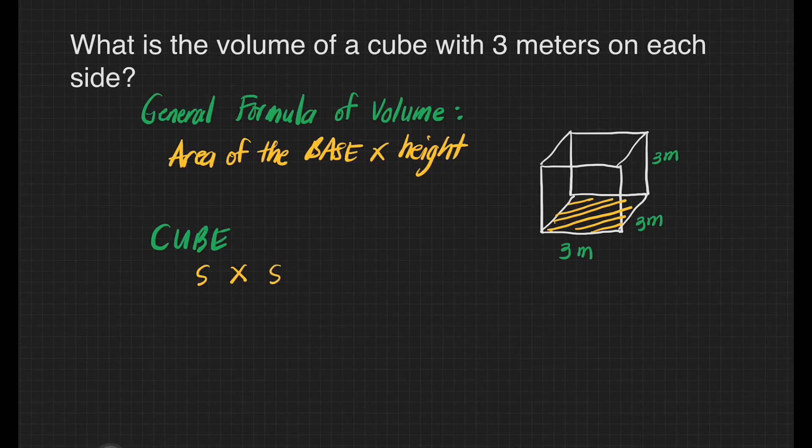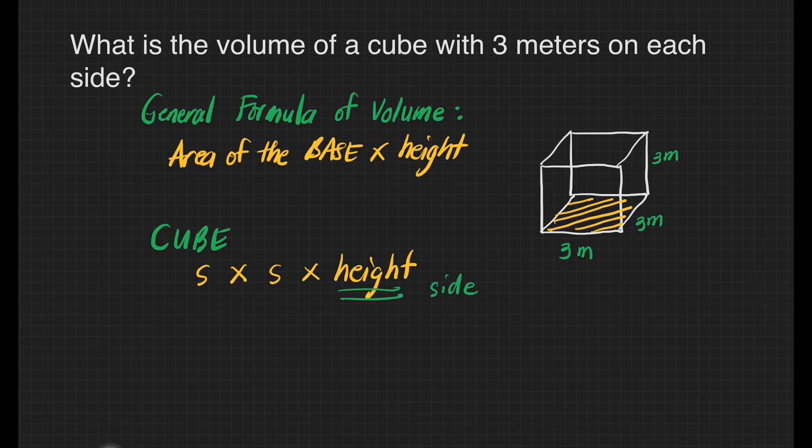To get the volume, just multiply it to its height. But our height here is just equal to our side. That's why we may write side times side times side.